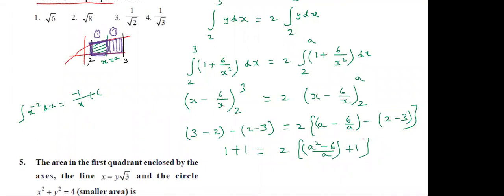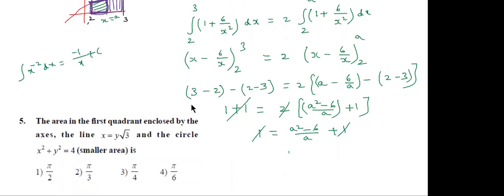Simplify: the 2s cancel, giving 1 = (A² − 6)/A + 1. Then 1 − 1 = (A² − 6)/A, so (A² − 6)/A = 0.